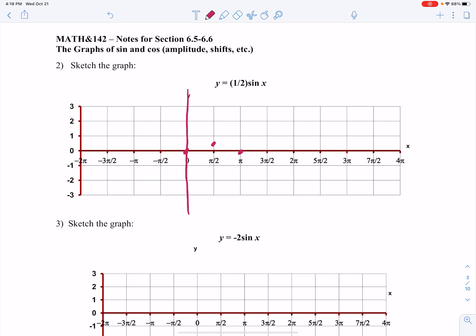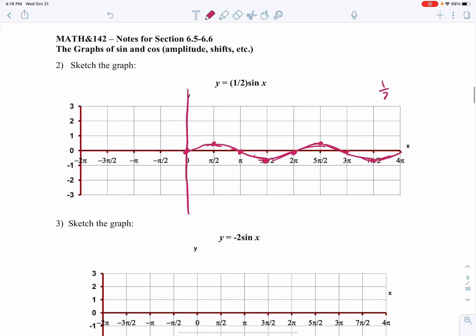And then I'm starting at 0, going up to a half, coming down to 0, going down to negative a half, and so on. And it keeps repeating. So I could take up the whole grid, but I think we get the idea. There's two periods of 1 half sine of x. And what you notice is plus or minus 1 half is the min or the max.